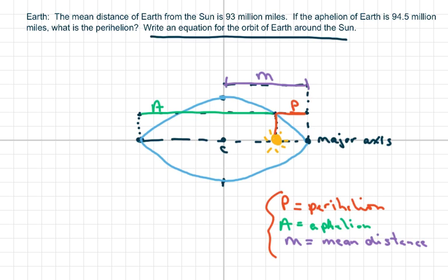The mean distance is basically the halfway point. They give you the longest distance from Earth to the Sun, they also give you the mean distance, and they want to know the perihelion. The mean distance is 93 million miles, so that means a is half of that.